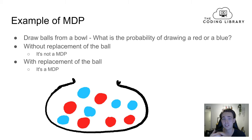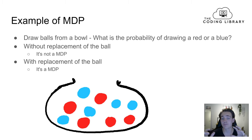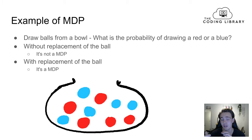This is a simple example of how to set up a process and determine if it's a Markov decision process or not — because in an MDP, the action we're going to take only depends on the present state and not on previous or past states or sequences of states before that.